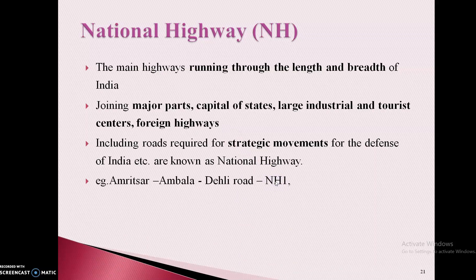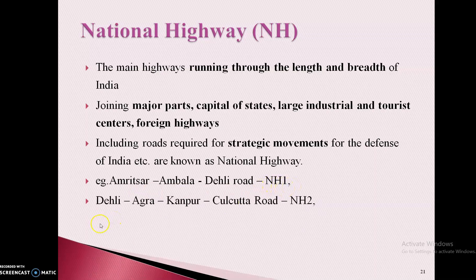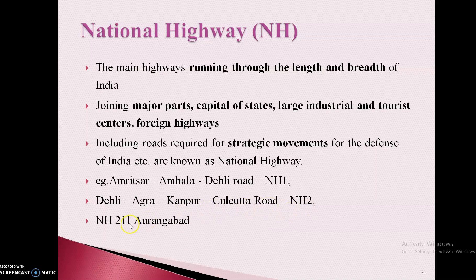For example, National Highway: Amritsar-Ambala to Delhi Road — this is our National Highway No. 1. Delhi, Agra, Kanpur, Calcutta Road — that is our National Highway 2. Around Aurangabad, National Highway 211. Road width varies from 7 to 15 meters.